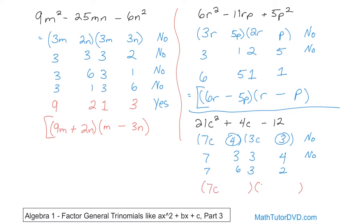So this will be 7c, this will be 3c, this will be 6, and this will be 2. 7 times 3 is 21c squared and 6 times 2 is 12. Now I'm looking for negative 12, so one needs to be positive and one needs to be negative. And I'm looking for positive 4. This term gives me 14 and this term gives me 18 — so I want the positive sign here and the negative sign there. Because 6 times 3 gives me positive 18 and this times this gives me negative 14. When I add them I get positive 4. So the final answer is 7c plus 6 times 3c minus 2.